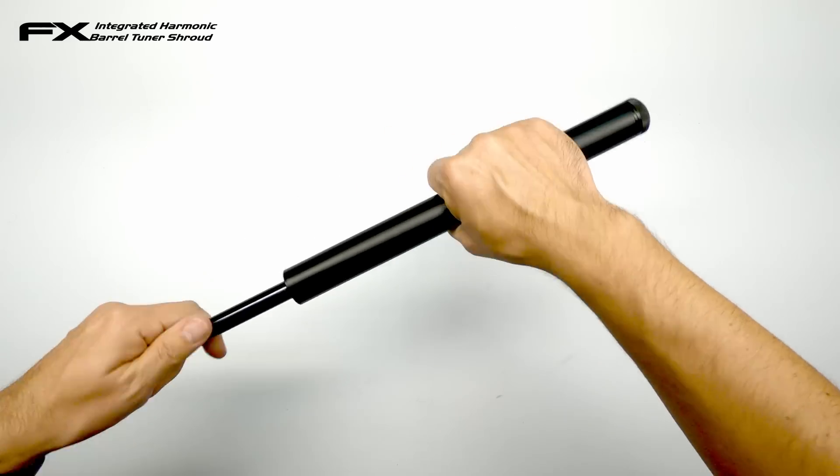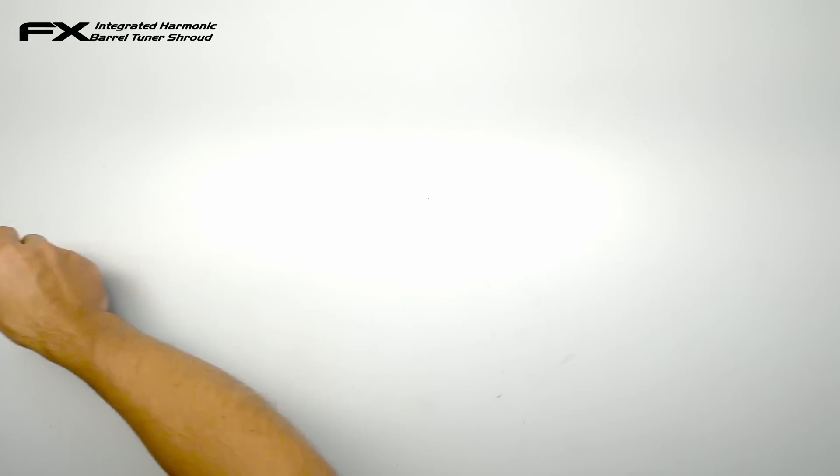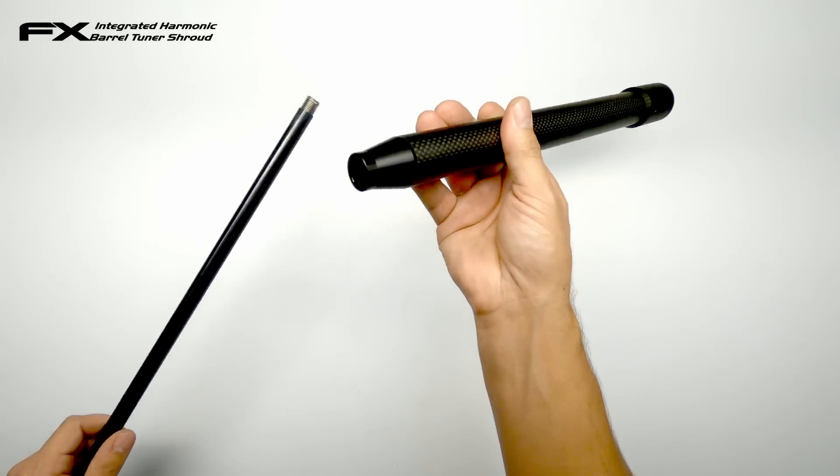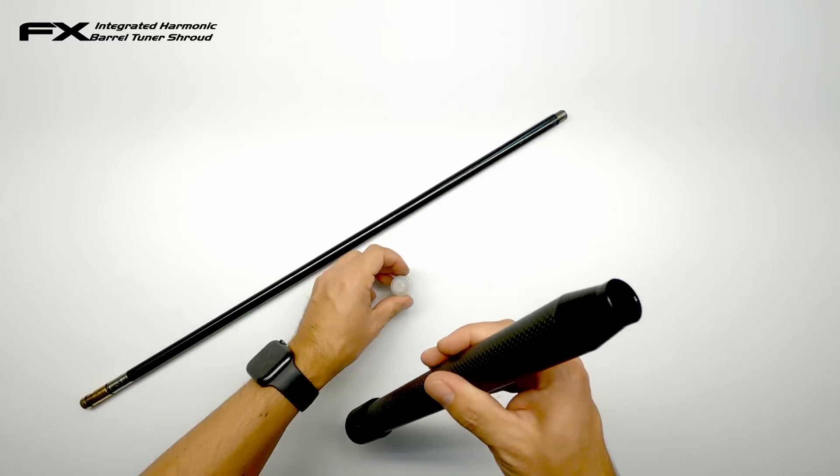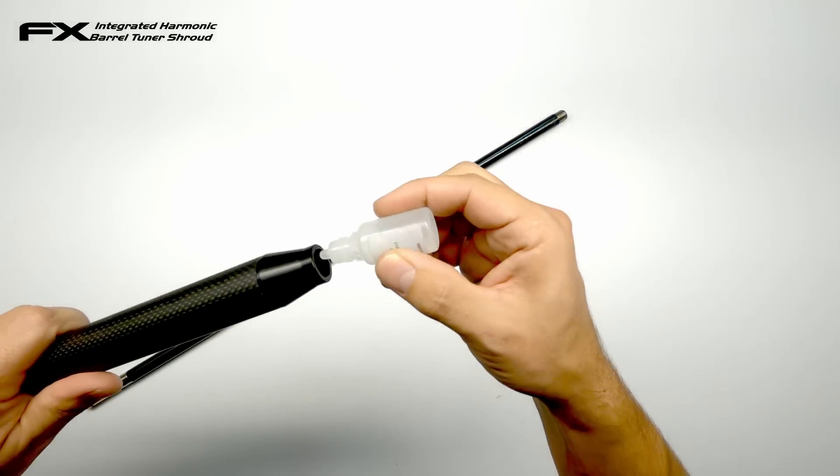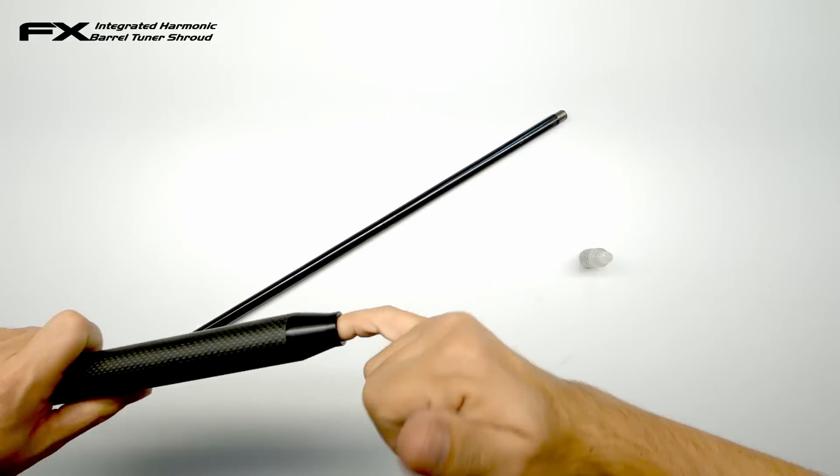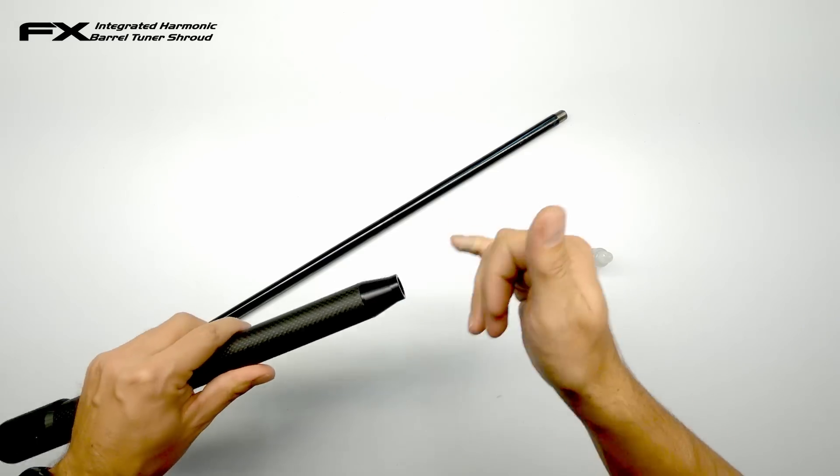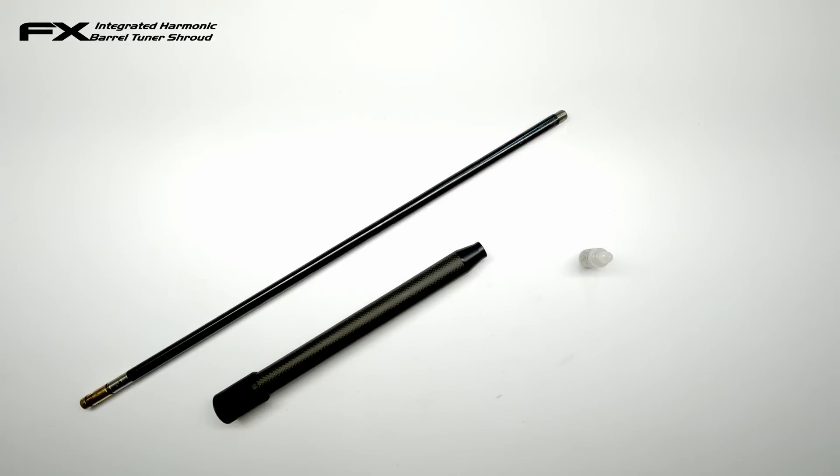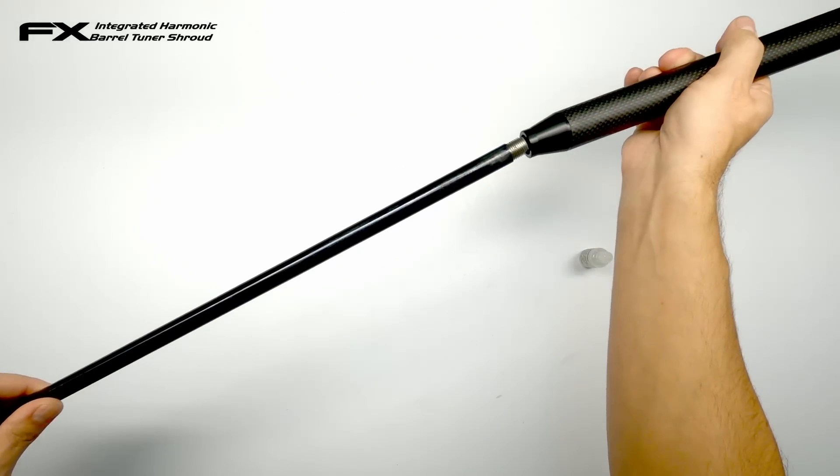So I'll quickly take off the shroud. Pull it out like this. Take the new harmonic barrel tuner. To make it a little bit easier to install I put a small drop of silicon oil on the inside. Wipe it with your finger to lube those o-rings a bit as it will be quite stiff to slide over the barrel.